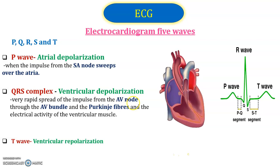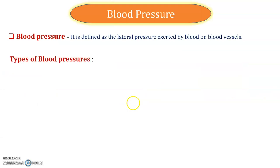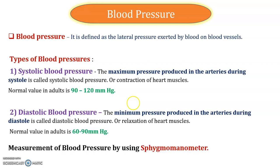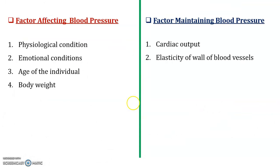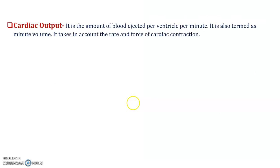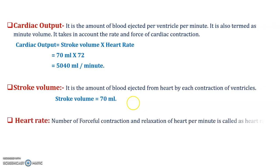The P wave represents atrial depolarization, QRS represents ventricular depolarization, and the T wave represents ventricular repolarization. Next is blood pressure — there are two types: systolic and diastolic. Blood pressure is defined as the lateral pressure exerted by the blood on the walls of blood vessels, and it is measured by the sphygmomanometer. There are different factors that affect and maintain blood pressure.